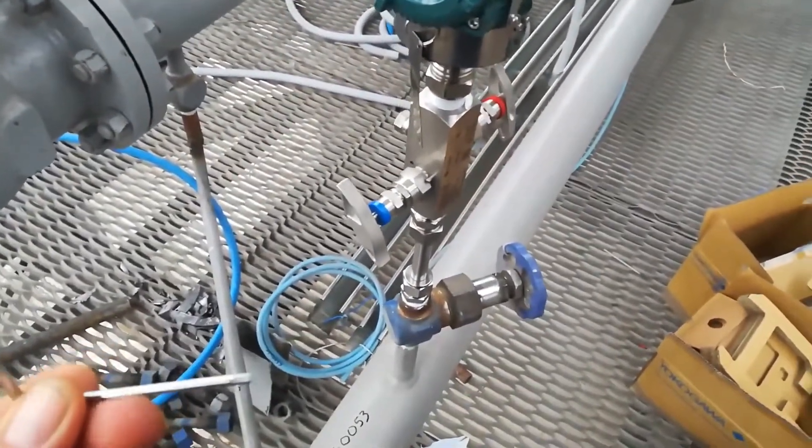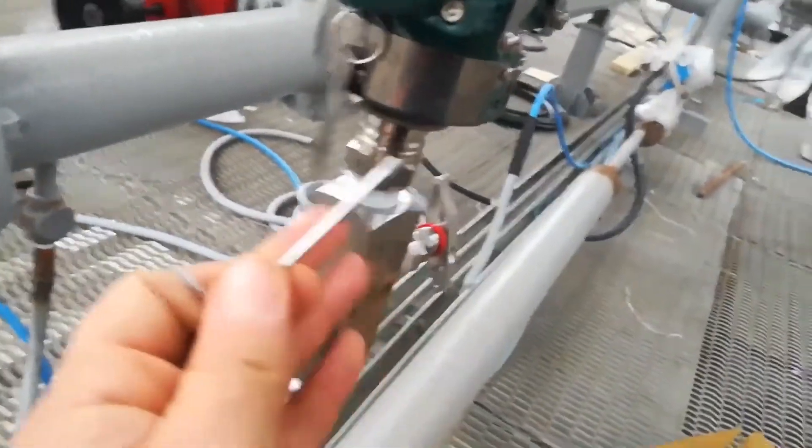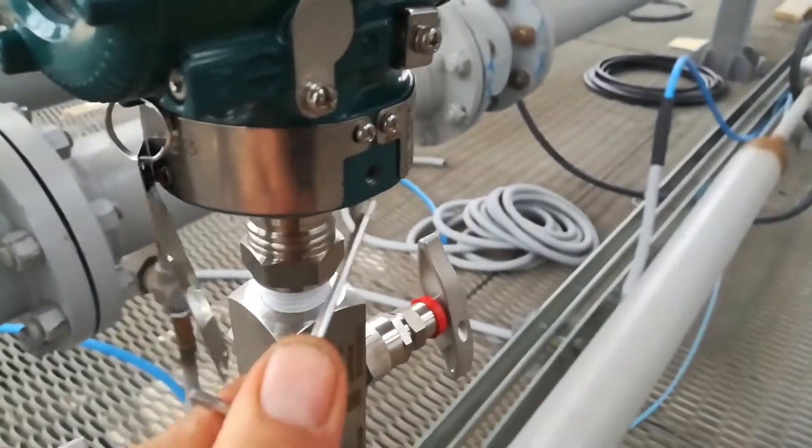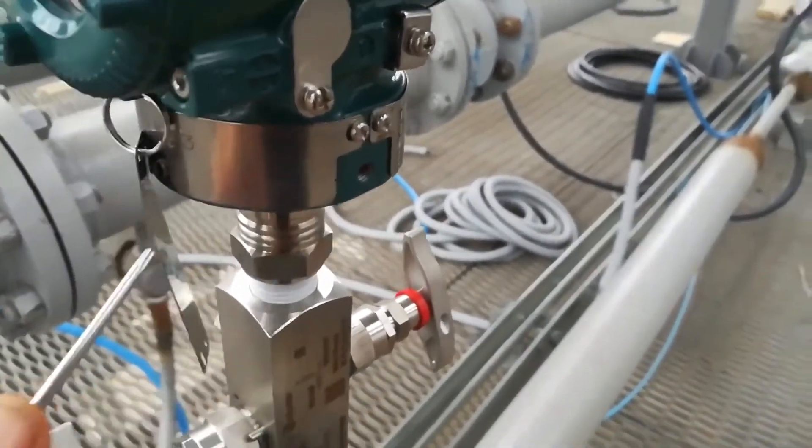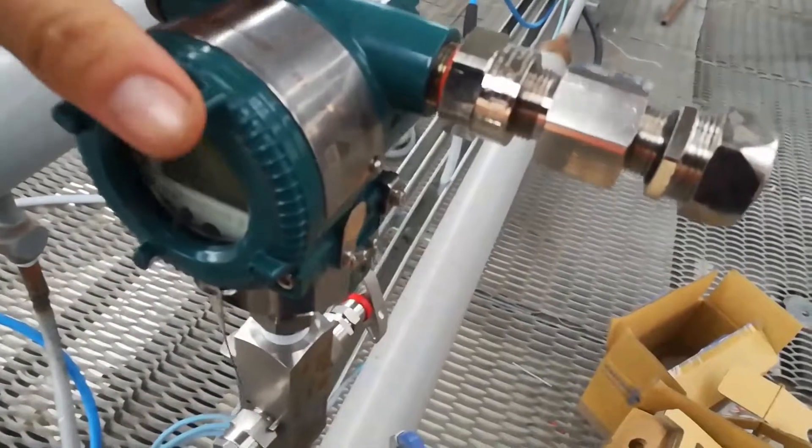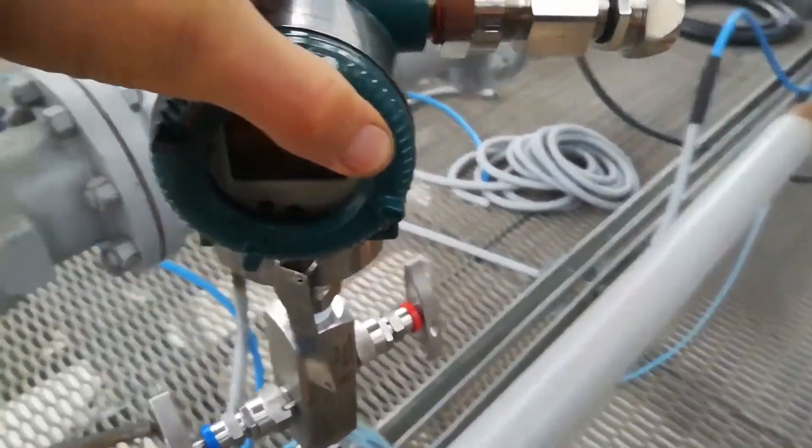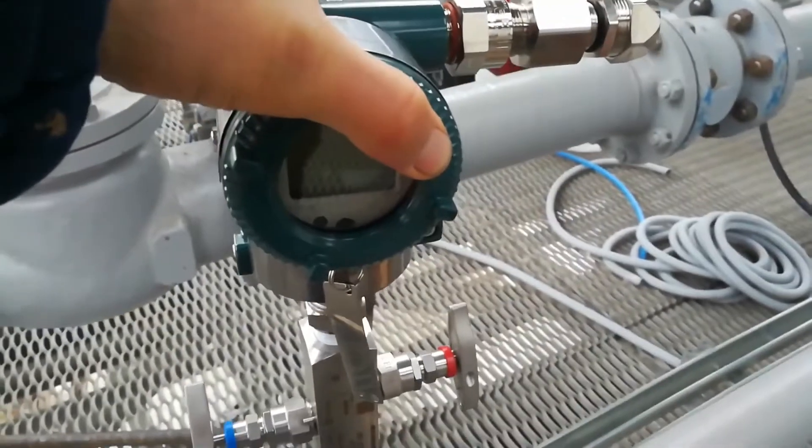The first thing you need to turn this sensor so that the display is turned towards the operator. It's important that the readings of the device are easily read. You need to unscrew two small hexagonal bolts, and this sensor can rotate 180 degrees.